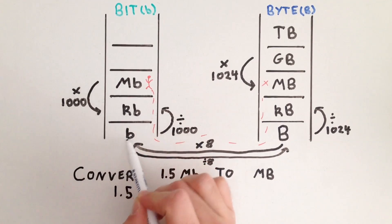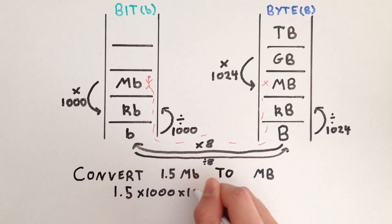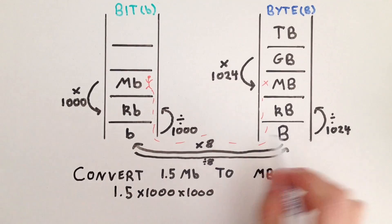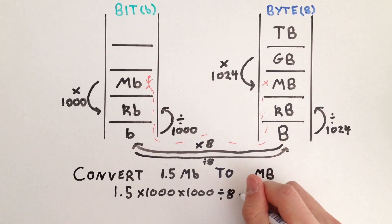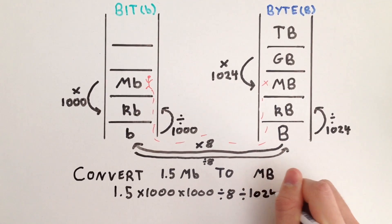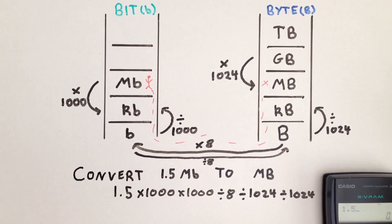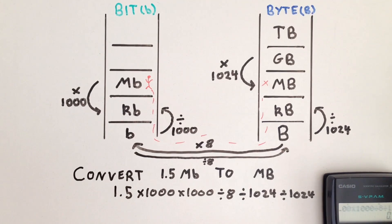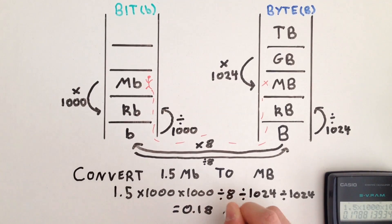Then we need to drop down two levels, so we're timesing by 1,000 twice. So we're here now. We need to cross over to the byte ladder, so we divide by eight. Then we need to go up two levels, so we divide by 1024 twice. Let's put that into our calculator: 1.5 times a thousand, times a thousand, divided by eight, divided by 1024, divided by 1024, and we get 0.18 megabytes.